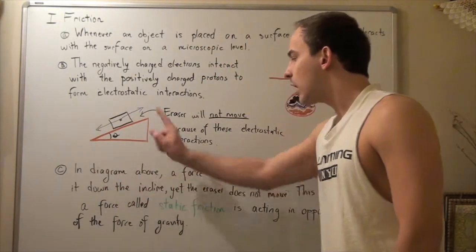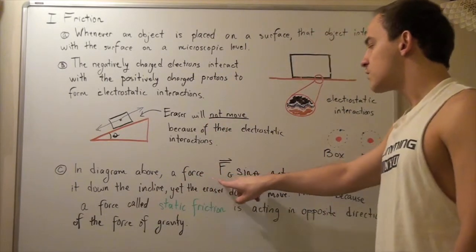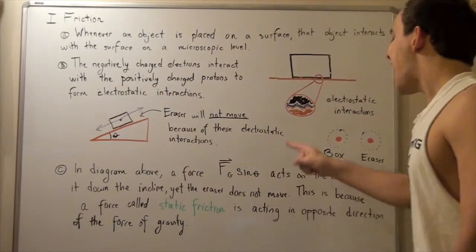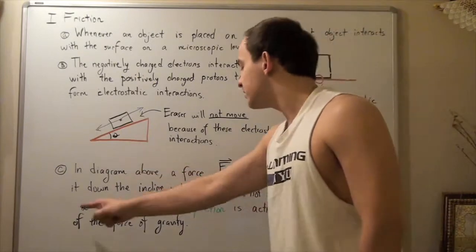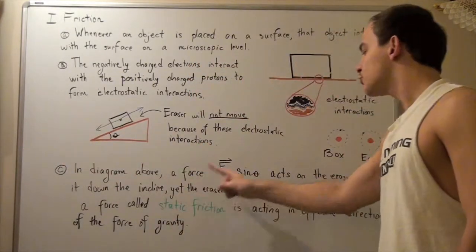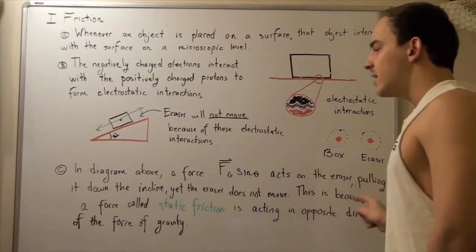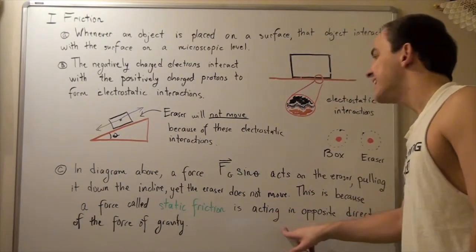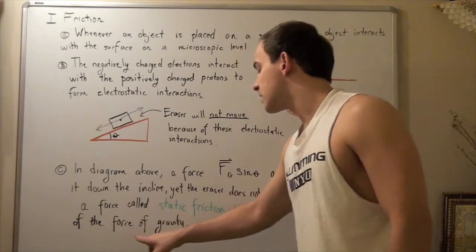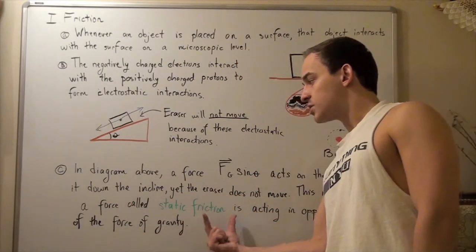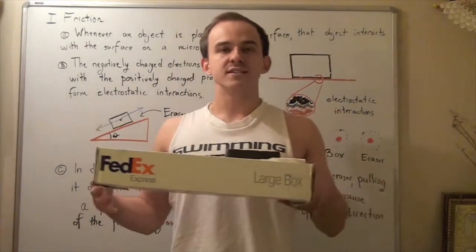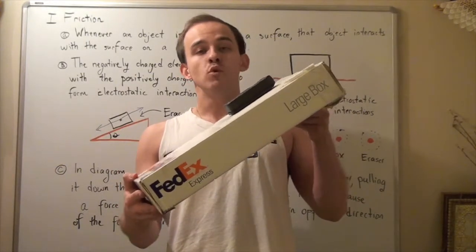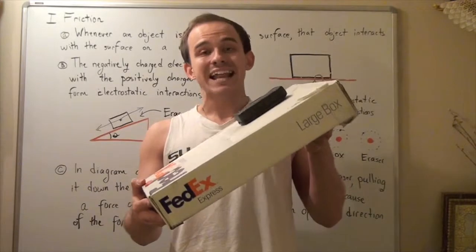In the diagram, the component force of gravity — given by gravity times sine theta — acts on the eraser, pulling it down the incline, yet the eraser does not move. This is because a force called static friction is acting in the opposite direction. The reason this frictional force is called static friction is because the object is not moving. As I increase the angle, the object still does not move because of this opposing static friction force.